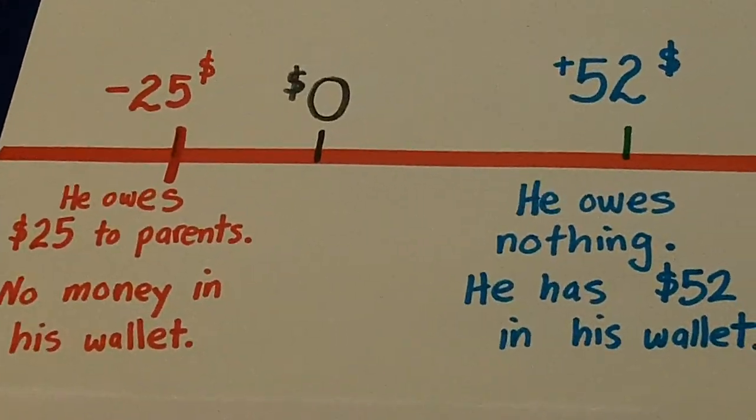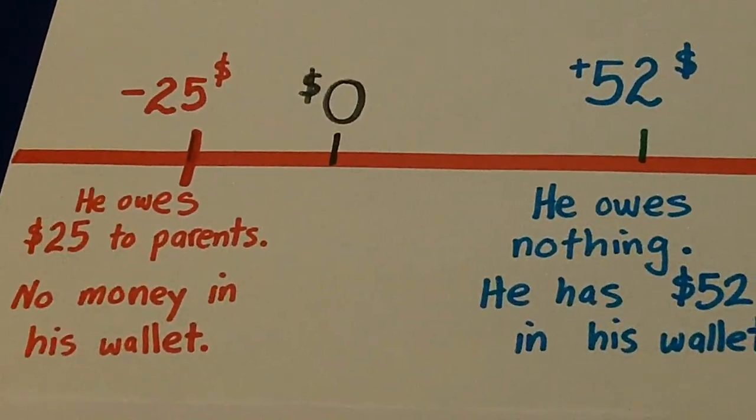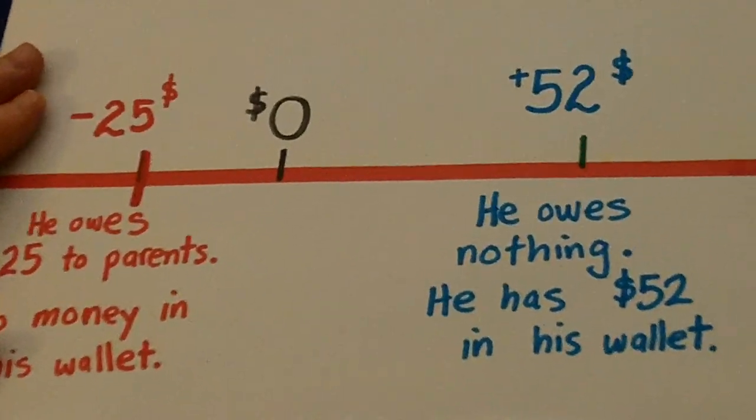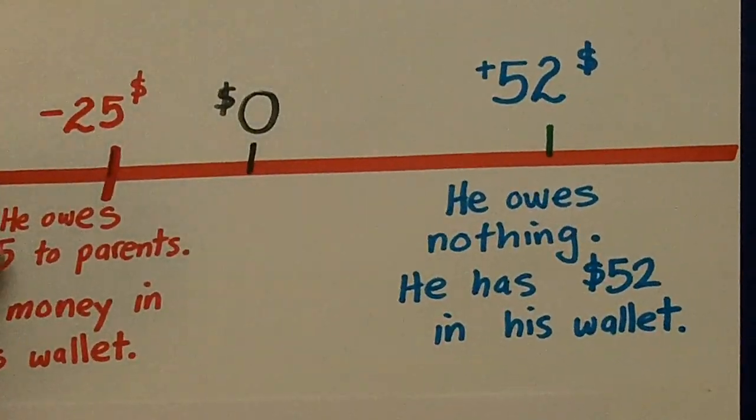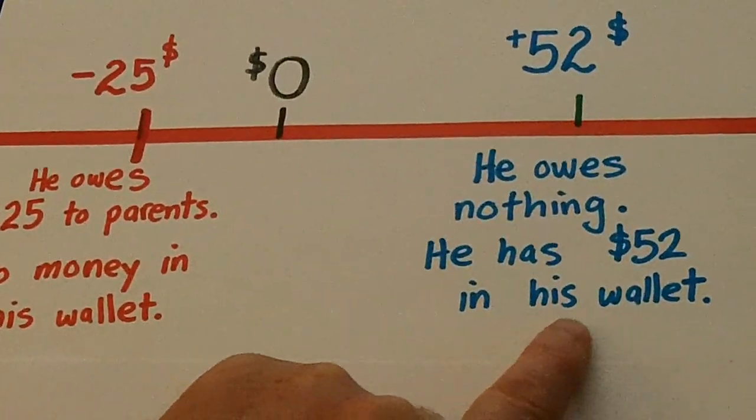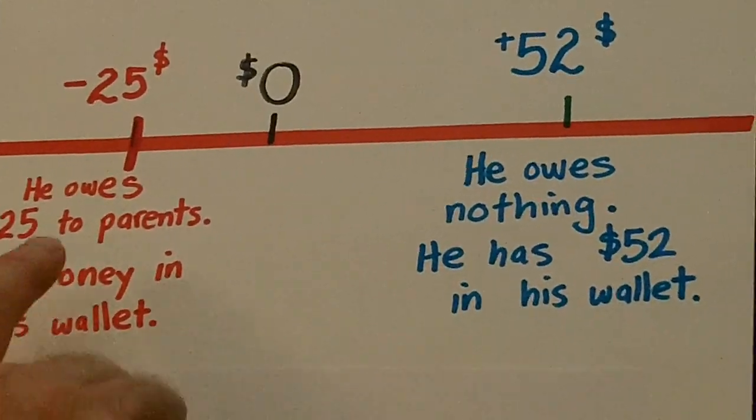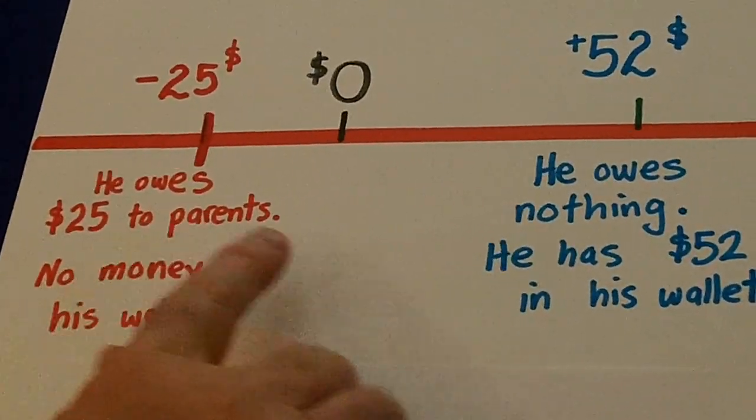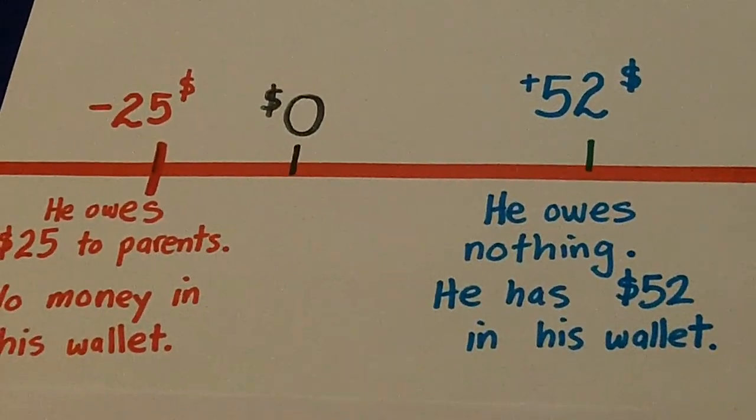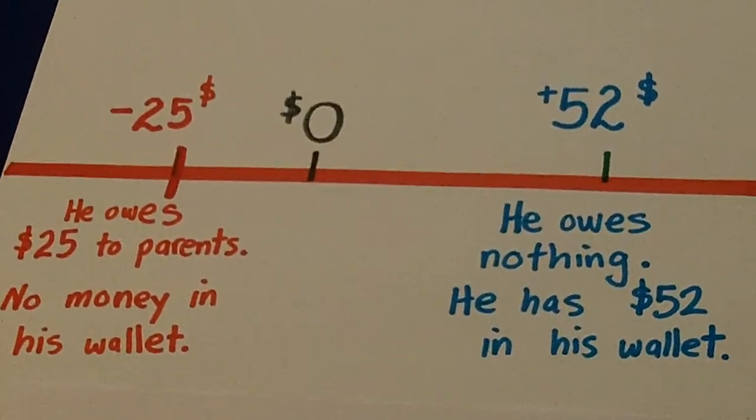Then he mows a few lawns, washes a few cars, does a little bit of babysitting in the next week. And then he pays back his parents. And now he has $52 in his wallet. So he paid off 25 bucks to his parents and he has $52 in his wallet. How much money did he earn over that week?